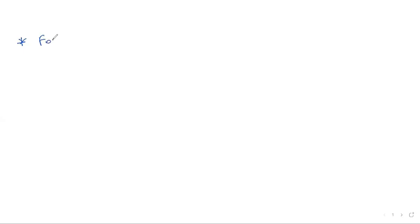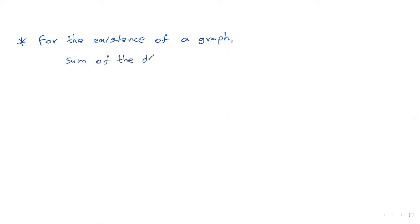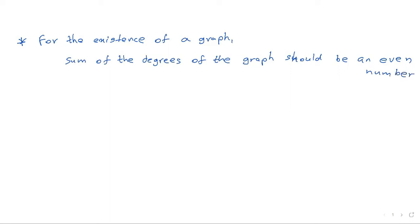Hello everyone. For this kind of questions we need to remember these two facts. First, for the existence of a graph, the sum of the degrees of the graph should be an even number. Second fact is: an undirected graph has an even number of vertices of odd degree.